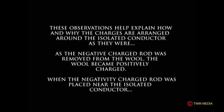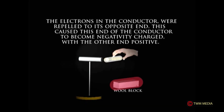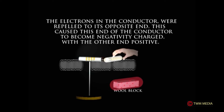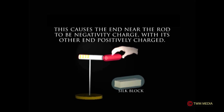These observations help explain how and why charges are arranged in the isolated conductor. As the negatively charged rod was moved from the wool, the wool became positively charged. When the negative rod was placed near the isolated conductor, the electrons in the conductor were repelled to its opposite end, causing that end to become negatively charged with the other end positive. If a glass rod were rubbed on a silk block, the rod would become positively charged, causing electrons to rush towards it — making the end near the rod negatively charged and the other end positively charged.